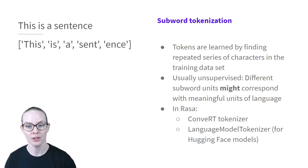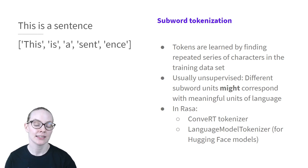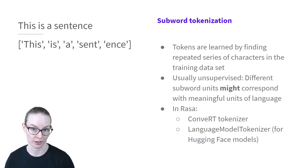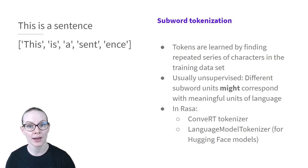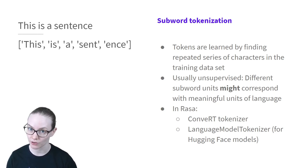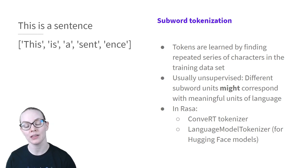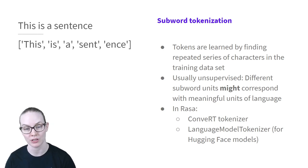So in this example, the word 'sentence' has been identified as two tokens, despite the fact that a human user would probably only identify it as one. In Raza, some tokenizers that use this approach include the ConveRT tokenizer, and also some of the language model tokenizers used for different Hugging Face models.